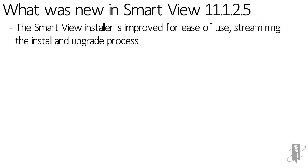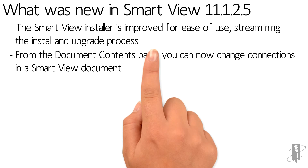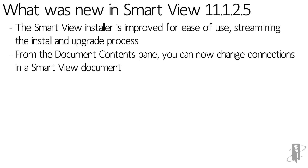Previously, you had to download Smart View from the web and put it on your server. Now, when you go to do an upgrade through Workspace, it goes directly out to the Oracle site to grab the latest version of Smart View. Also, within Smart View from the document contents pane, you can now change the connections on a Smart View document.